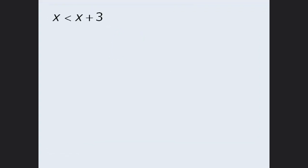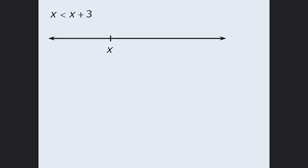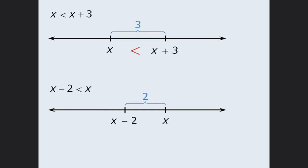The next technique is best illustrated through the following examples. Since x always equals x, we can conclude that x plus 3 must always be greater than x for all values of x. To see why, examine x on the number line: adding 3 to x moves 3 units to the right, so x lies to the left of x plus 3, meaning x is less than x plus 3. Similarly, x minus 2 must be less than x, since x minus 2 lies 2 units to the left of x on the number line.